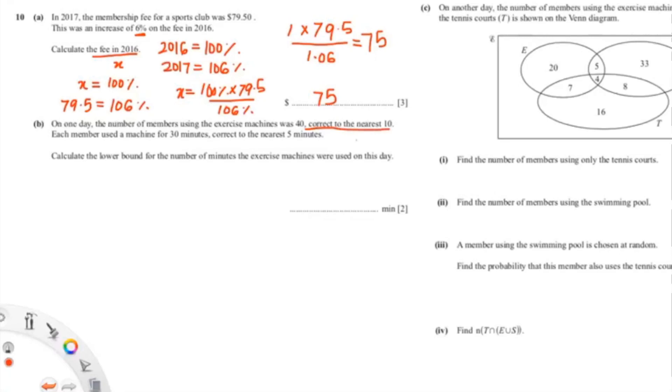In this next question, they're asking about lower bounds and upper bounds. This is correct to the nearest 10, and this is nearest 5.